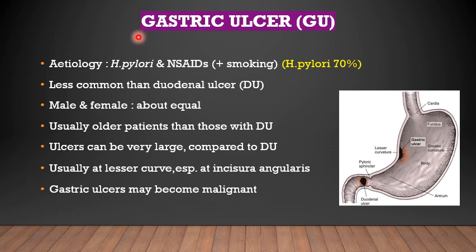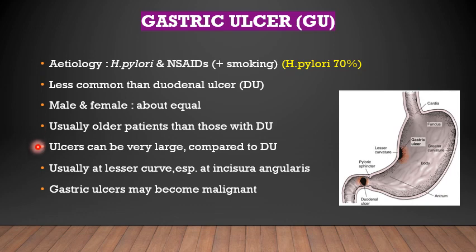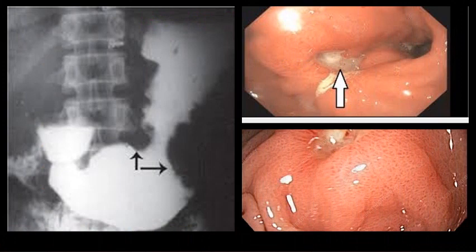Now we come to gastric ulcer in more detail. Etiology: H. pylori and NSAIDs are proven etiological factors, together with smoking. It is less common than duodenal ulcer. Male and female have about equal incidence, usually in older patients than those with duodenal ulcer. The ulcers tend to be very large compared to duodenal ulcers. The usual site is at the lesser curve, especially at the incisura angularis — the lower part of the lesser curve, body and trunk.